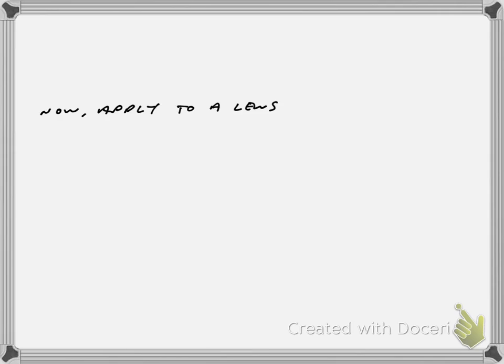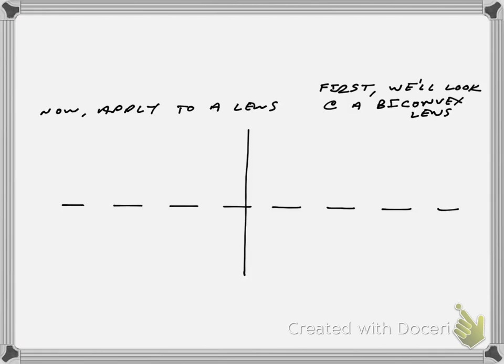The first type of lens we want to discuss is called a bi-convex lens. Bi-convex means it's made up of two surfaces put together, each side curving outward — so bi-convex literally means two outward-facing surfaces. It looks like this, and we can see a practical application by tracing some light rays through it.